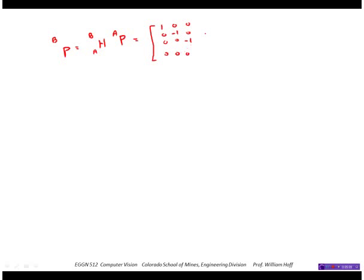And the translation, the origin of B and the A is 0, 0, 10. And then we stick a 1 there. Okay. So we multiply that by the position of a point in the A frame, which we said was this.